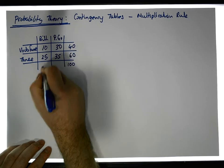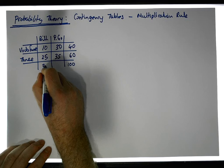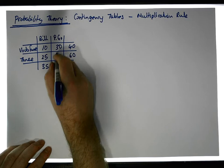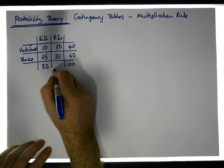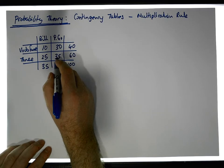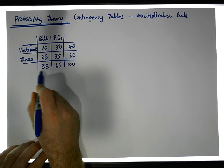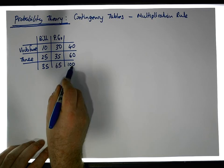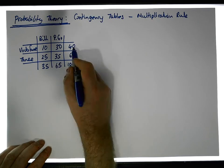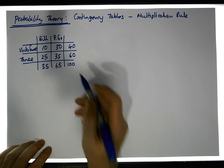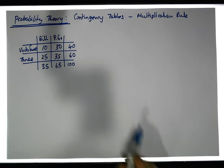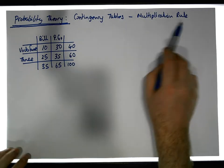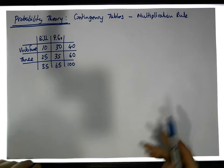That gives us marginal totals of 40 and 60, and 35 and 65. When we look at the marginal totals, 35 and 65 gives us 100, and 40 and 60 gives us 100.